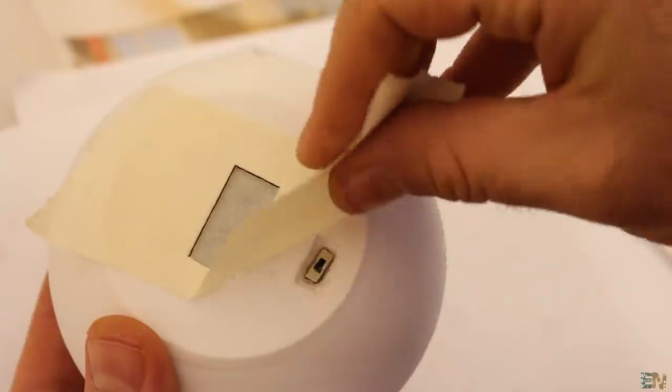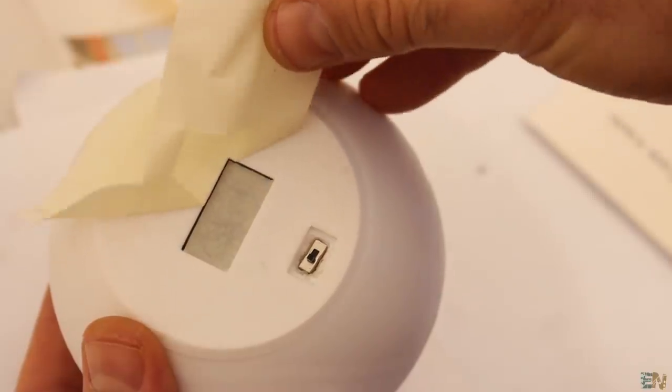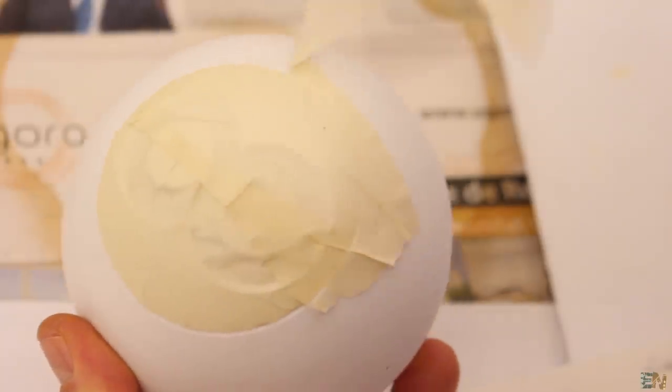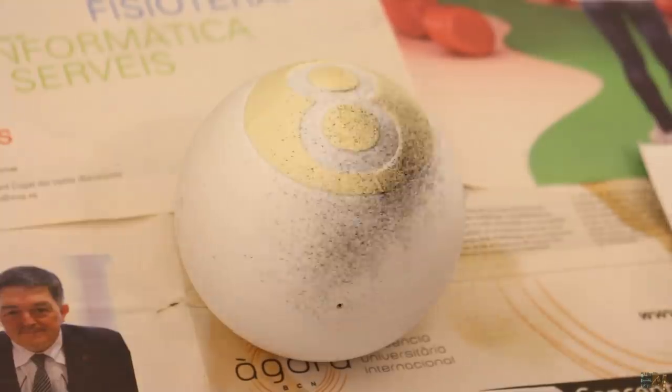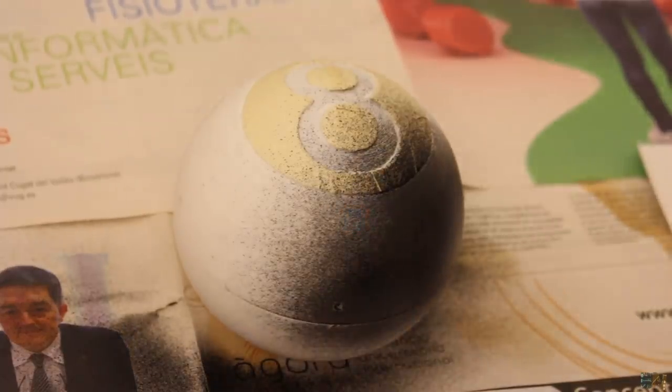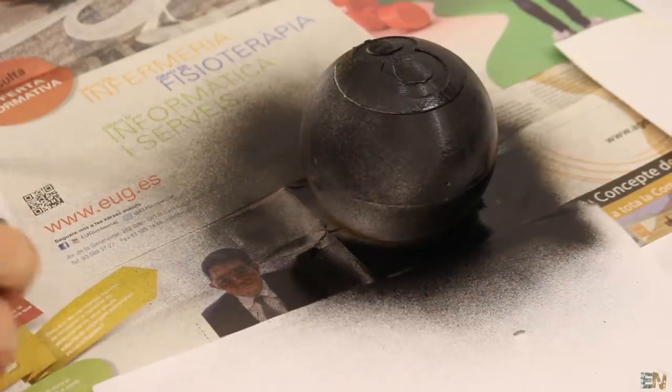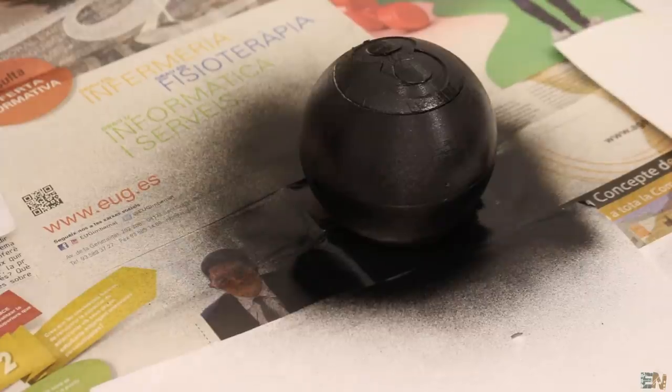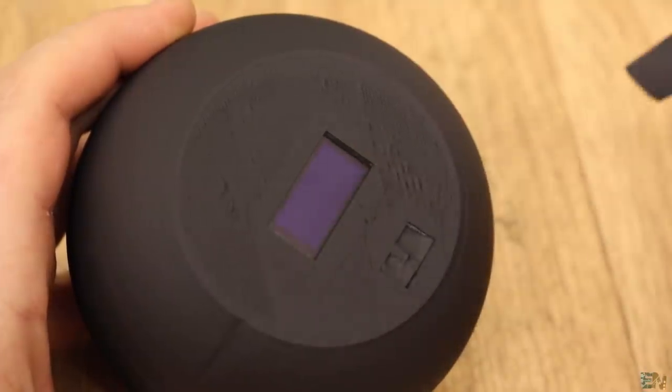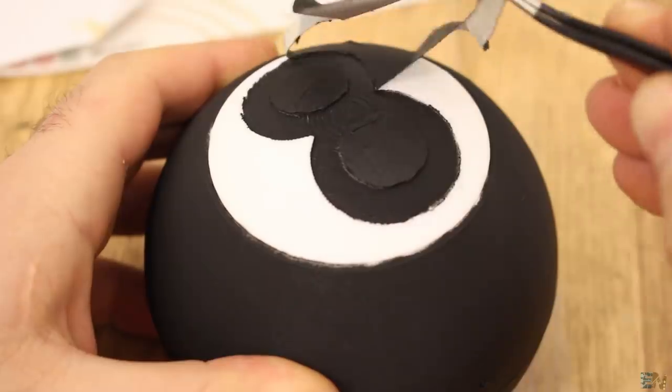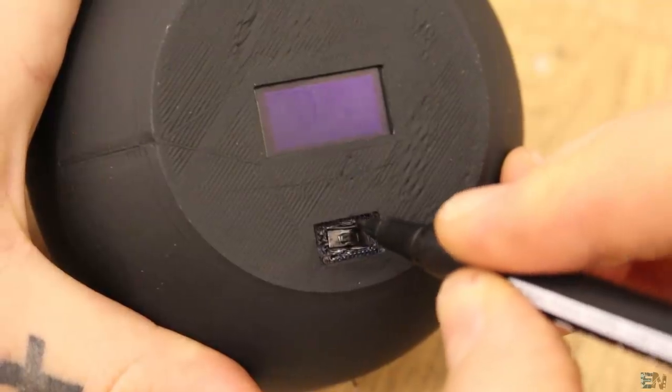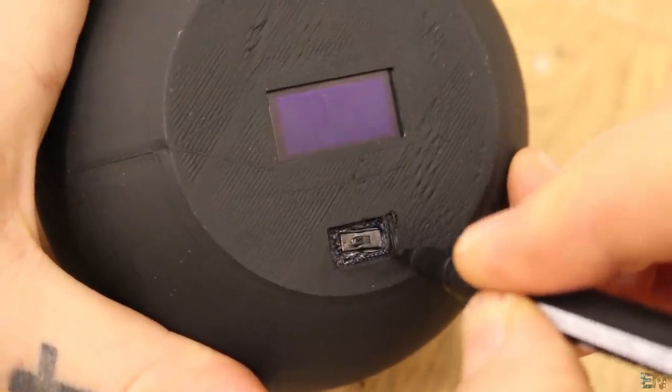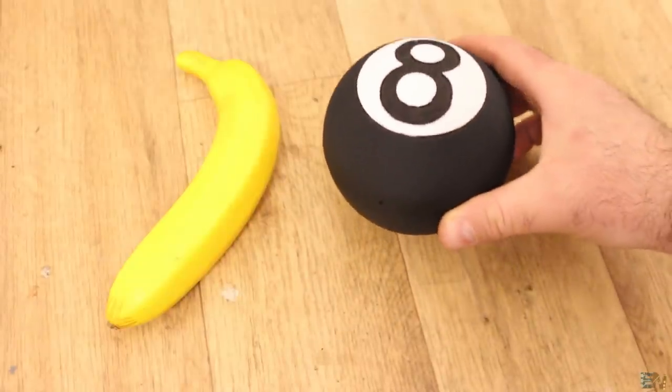I add a little bit of glue and close the case. I make sure that the 8 on top is aligned with the screen below. Now we have to paint it. I cover all the parts that must remain white with some tape. Now I spray paint the entire magic ball with some black paint. Then you have to let it dry for a few hours. When the paint is dry, I remove all the protective tape. You might need to correct some errors with a black Sharpie. So now we have our magic 8 Ball ready to use.